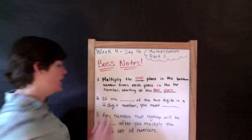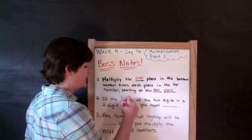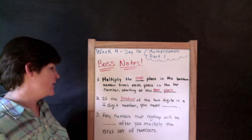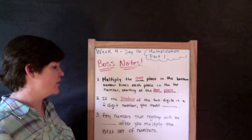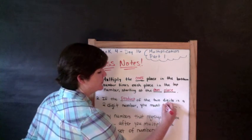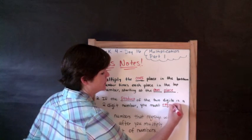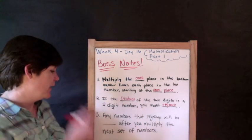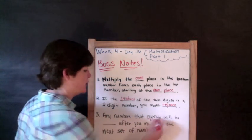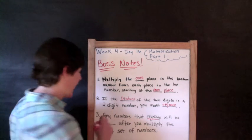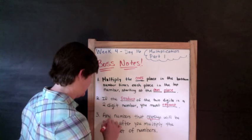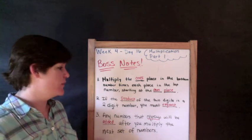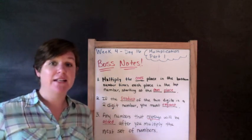Now it's okay if this doesn't make sense yet, but we will be referring back to these throughout this lesson. If the product of the two digits is a two-digit number, you must regroup. But you do something special when you regroup, and that's step three: any numbers that regroup will be added after you multiply the next set of numbers.